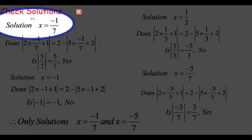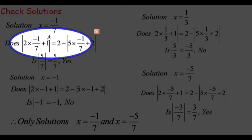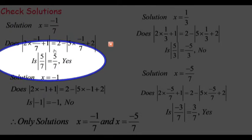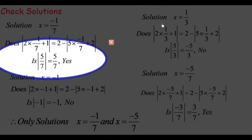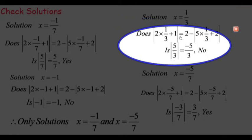The first solution: x = -1/7. You put that in where the x was and see if it satisfies the equation. Yes, it does. The absolute value of 5/7 equals 5/7. How about when you put in 1/3? Is the absolute value of 5/3 equal to -5/3? No, so that one doesn't work.